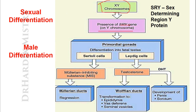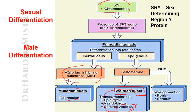The fetal testis converts the primordial gonads into Sertoli cells and Leydig cells. The Sertoli cells produce Müllerian Inhibiting Substance (MIS), which causes Müllerian duct regression — the structure responsible for female sexual differentiation. The Leydig cells secrete testosterone, under the effect of which the Wolffian duct transforms into the epididymis, vas deferens, and seminal vesicles.